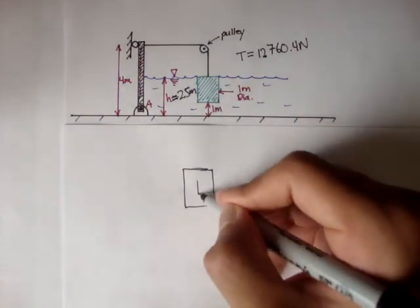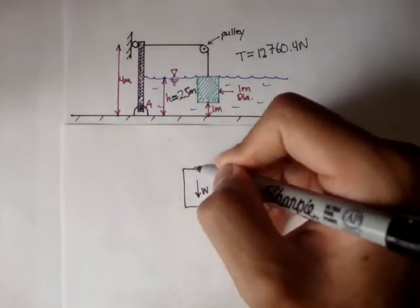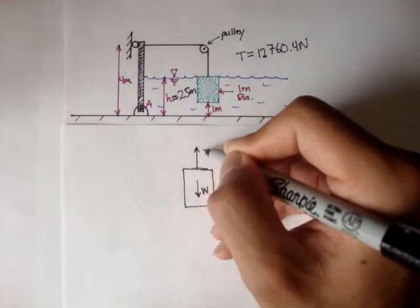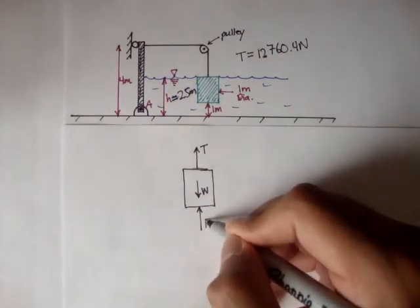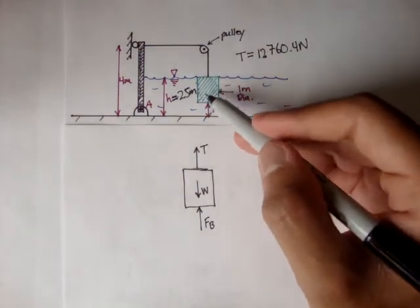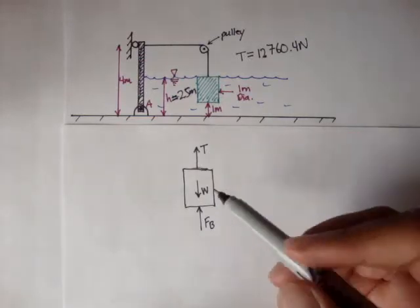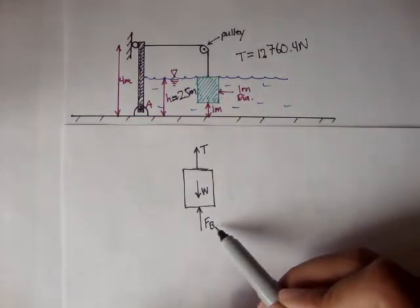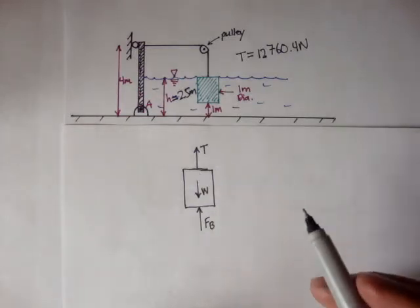The block has a weight, we'll call it W. It also has the tension in the cable, and it also has a buoyant force. Because it's submerged underwater and it's displacing that much amount of water, that amount of water's weight is equal to the buoyant force pushing up against the block.